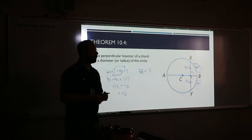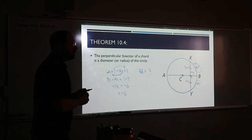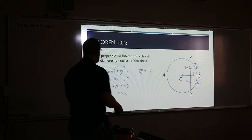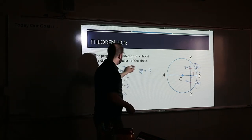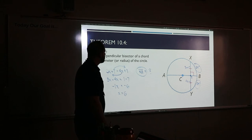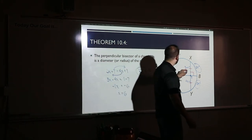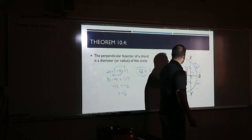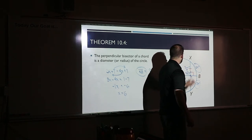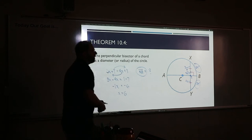So subtract across: 3x minus 4x gives negative 1x; 1 minus 7 gives negative 6. So negative 1x equals negative 6, meaning x equals 6. Divide by negative 1. Now plug it back in to find the stick length: 3 times 6 plus 7 equals 18 plus 7 equals 25.